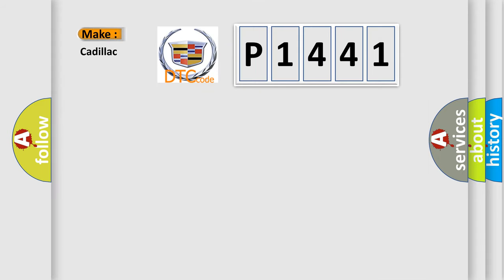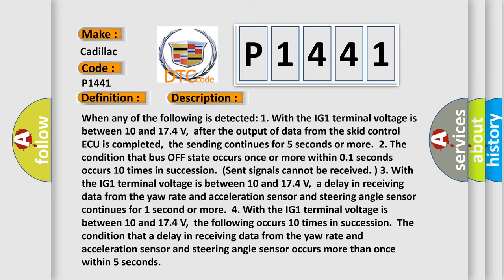So, what does the diagnostic trouble code P1441 interpret specifically for Cadillac car manufacturers? The basic definition is control module communication bus off. And now this is a short description of this DTC code.